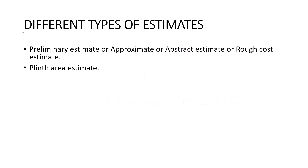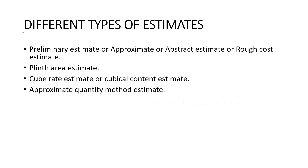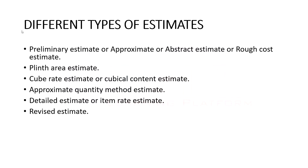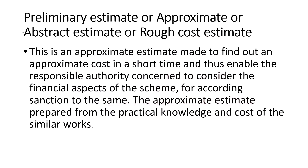There are different types of estimates: first, the preliminary estimate, also called approximate abstract estimate or rough cost estimate; second, plinth area estimate; third, cube rate estimate or cubical content estimate; fourth, approximate quantity method estimate; fifth, detail estimate or item rate estimate; sixth, supplementary estimate; seventh, supplementary and revised estimate; and eighth, annual repair and maintenance estimate.